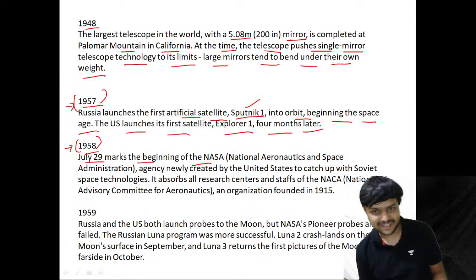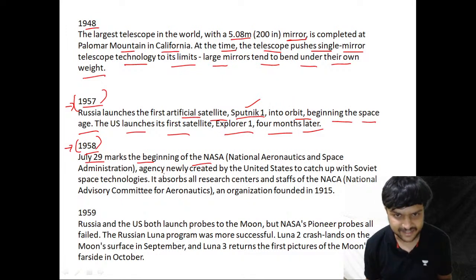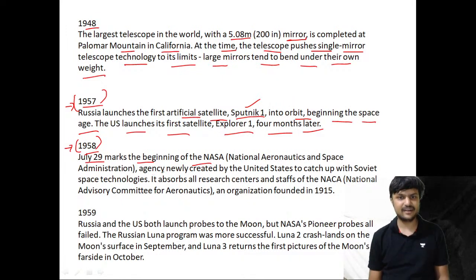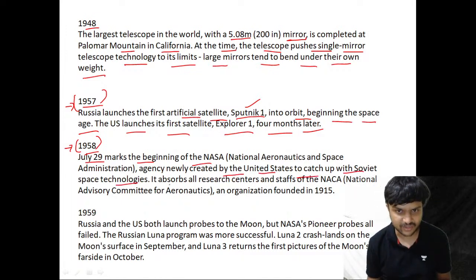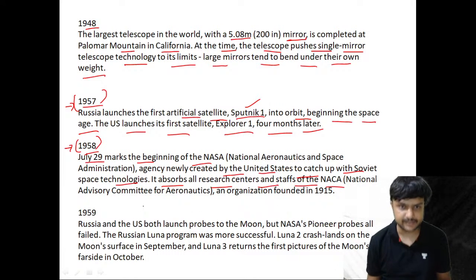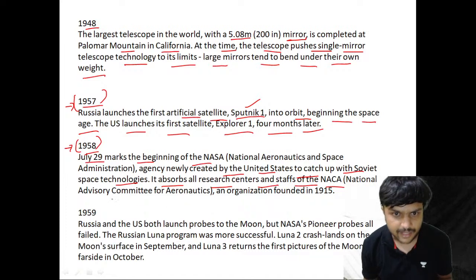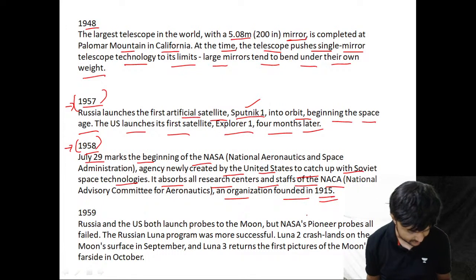On July 29, 1958, marks the beginning of NASA — the National Aeronautics and Space Administration — a newly created agency by the United States to catch up with Soviet space technology. It absorbs all the research centers and staff of NACA, the National Advisory Committee for Aeronautics, an organization formed in 1915.